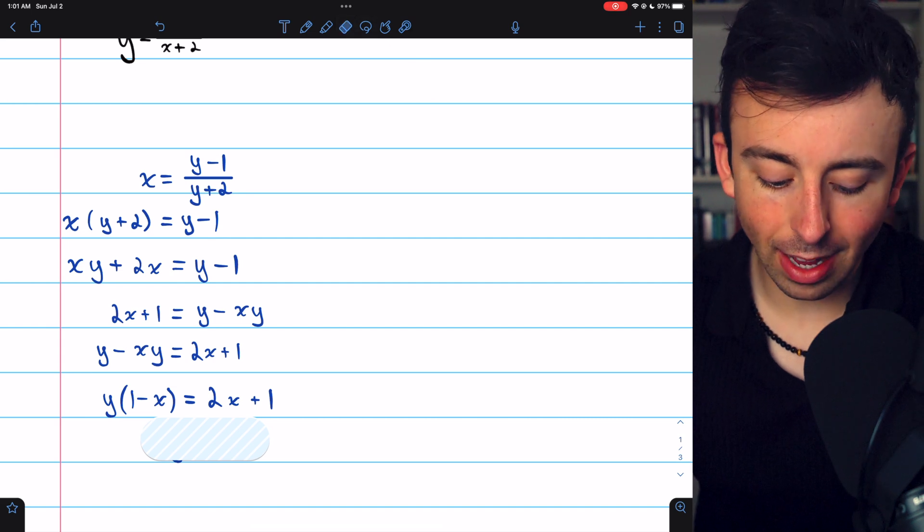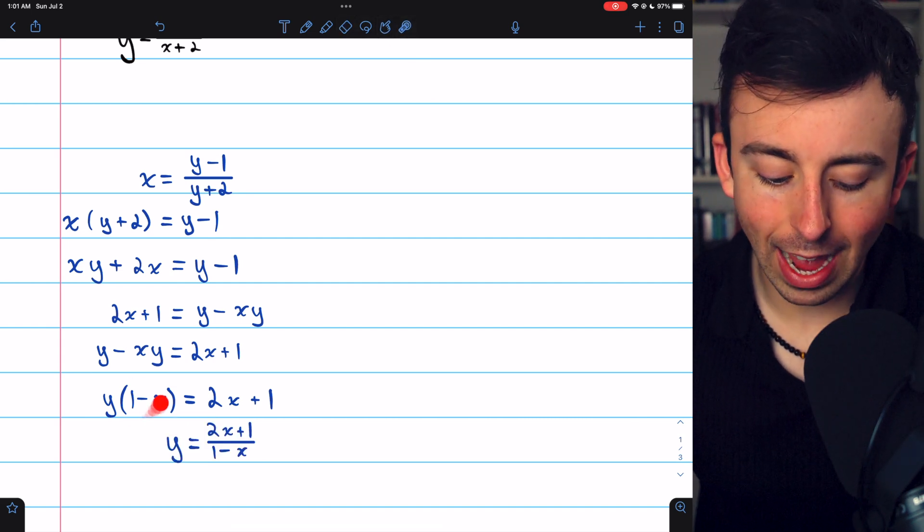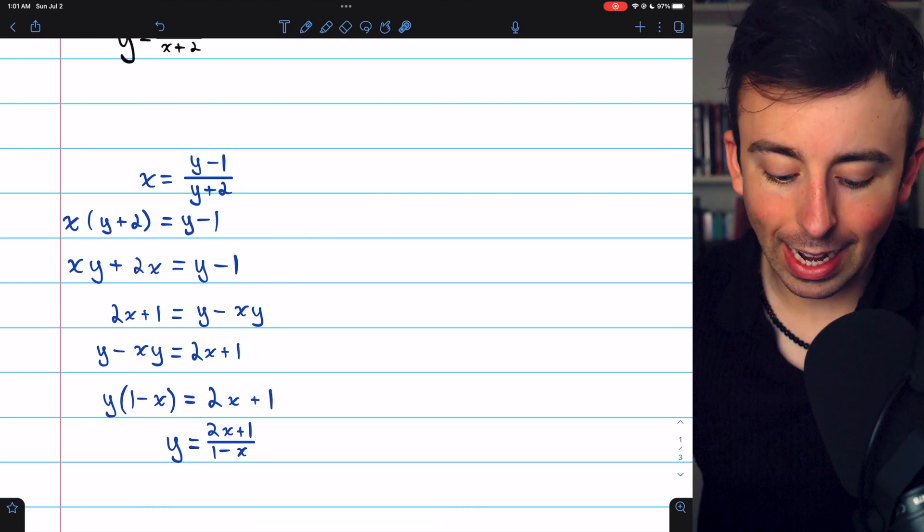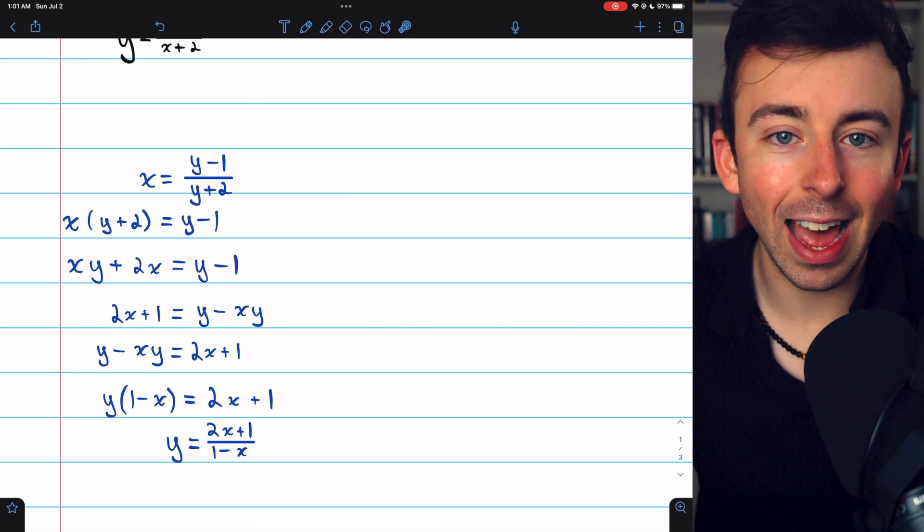At this point, we can divide both sides by one minus x to get y by itself on the left side. That gives us y equals 2x plus one divided by one minus x.